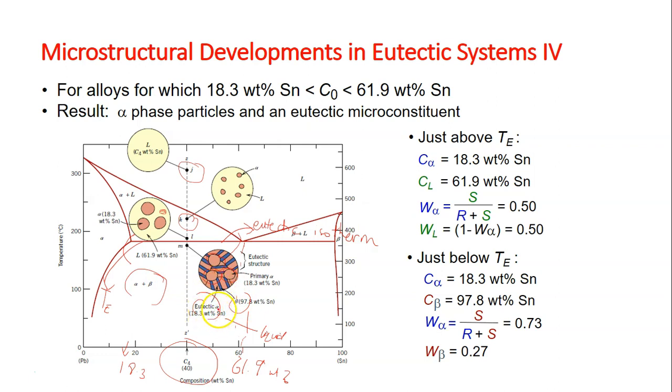we call eutectic alpha, which has the same composition of 18.3% Sn due to the tie line we draw. And the beta here has a composition of 97.8% Sn based on this tie line.